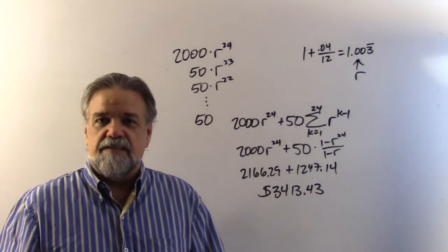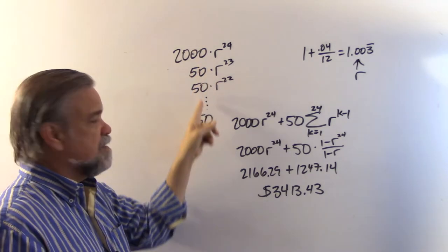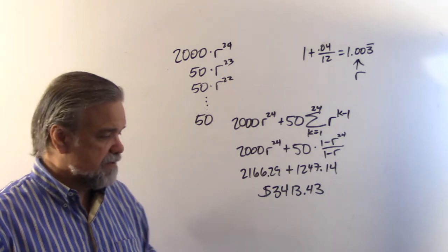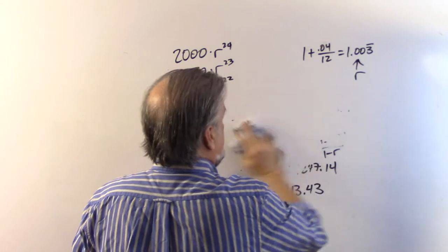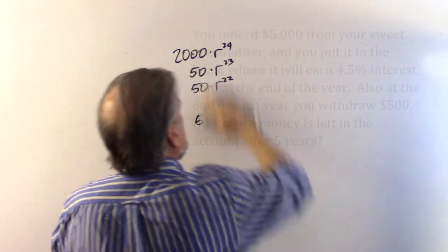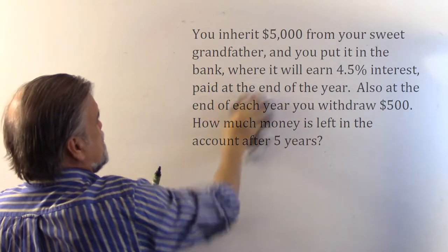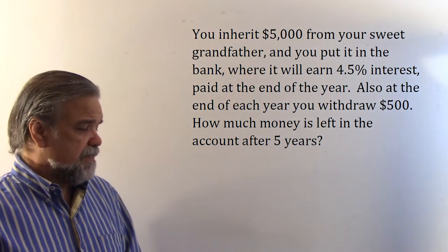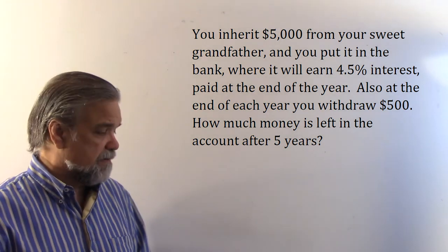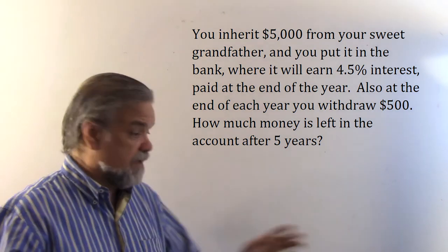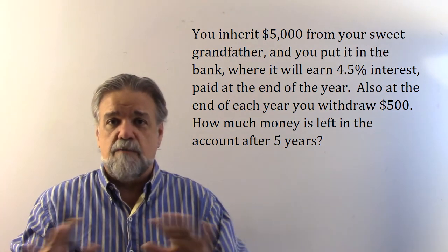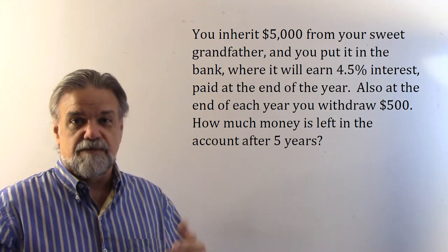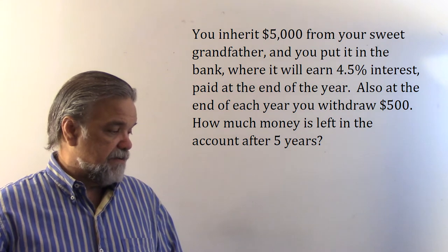It's actually not that difficult. Once you think about each payment and how much interest it's getting, and then you add those payments up, you see it turns into a geometric series really easily. Let's do another one — more money problems. This time you inherit $5,000 from your grandfather, and you put it in the bank where it earns 4.5% interest paid at the end of the year — so annual interest, not compounded monthly. Also at the end of each year, you're withdrawing $500 — a little Christmas bonus type thing. How much money is left after five years?